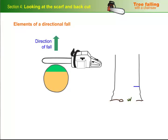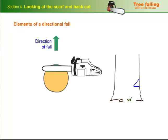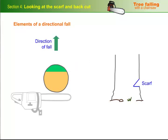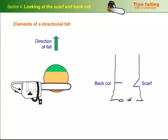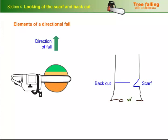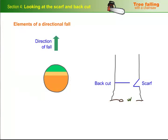The simplest and most common way to fall the tree is to put a standard scarf cut at the front, followed by a back cut. The back cut stops short of the scarf, leaving a section of wood fibers called the hinge wood, because it works like a hinge as the tree falls.